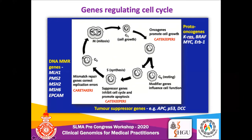Then we have another group of genes — the caretakers — the DNA mismatch repair genes. What they basically do is correct mismatch errors during the replication process. So you can see that this whole process of cell division is tightly regulated by these genes, which act at different checkpoints.